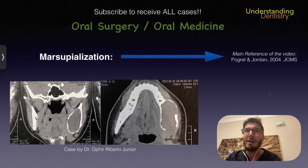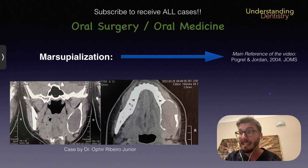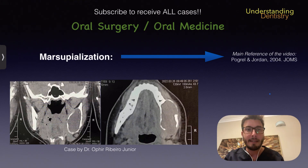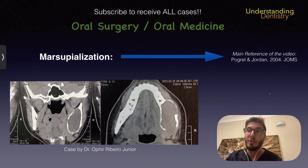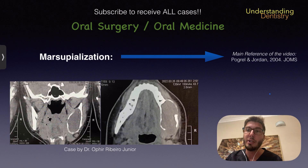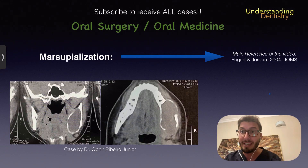The cystic cavity will remain open, which means we sometimes need the cooperation of the patient, or we need to adopt a strategy to keep this cavity open and clean. This will lead the cyst to recede, and then it usually allows us to perform, if necessary, another surgical approach to remove any remaining cysts. Sometimes marsupialization can also be considered a definitive treatment according to the literature — it depends on the case.